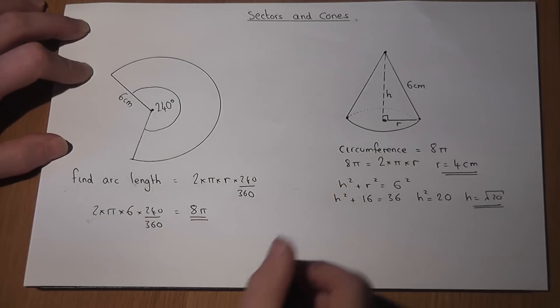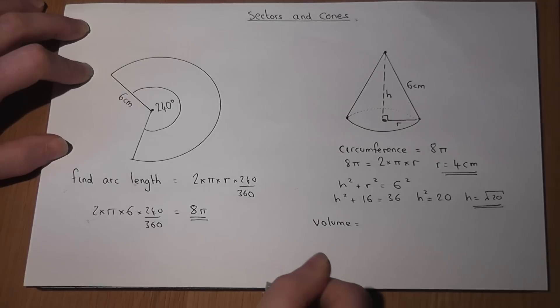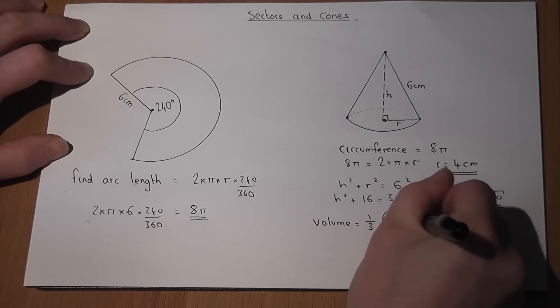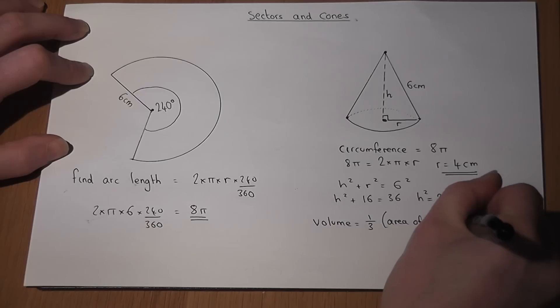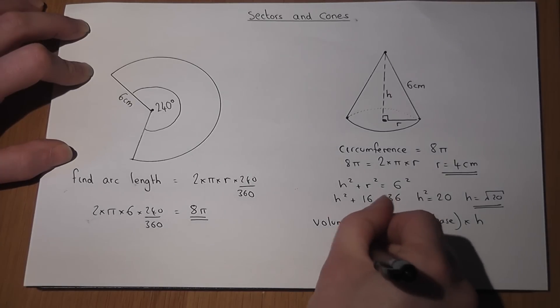So finally, I can find the volume. The volume of a cone is given by a third times the area of base times the height. That formula is given to you in the exam.